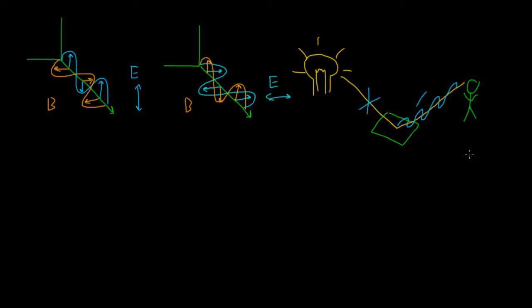This is actually why sunglasses can help reduce glare. A good pair of sunglasses has a polarized filter in them that only let through vertically polarized light. So the scattered light that has a horizontal polarization, this strong source of glare, is blocked by the sunglasses, and we can see things more easily.